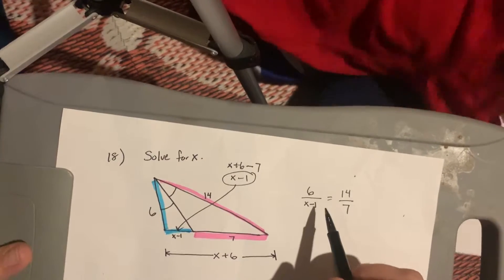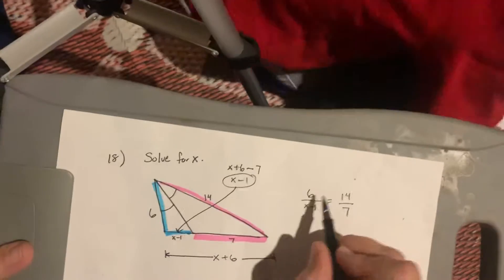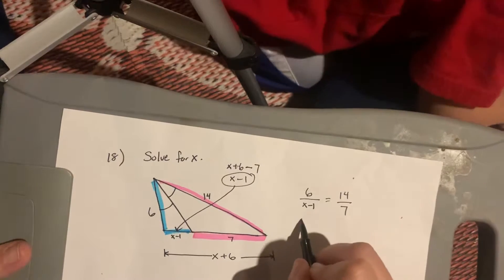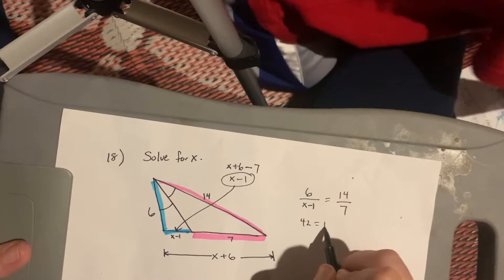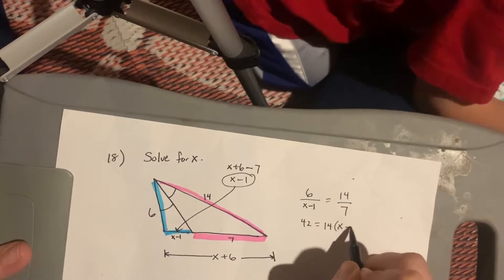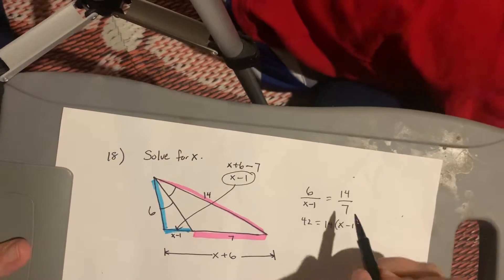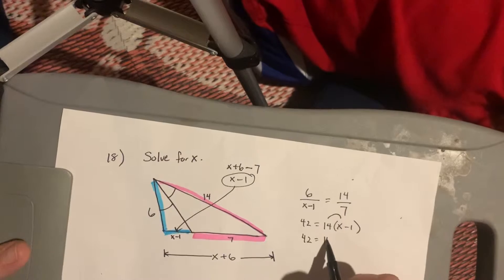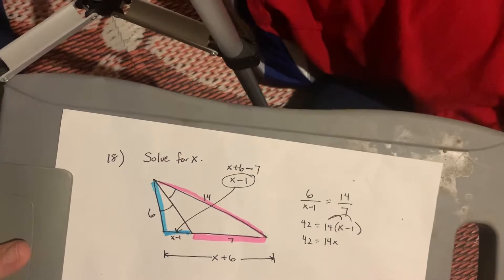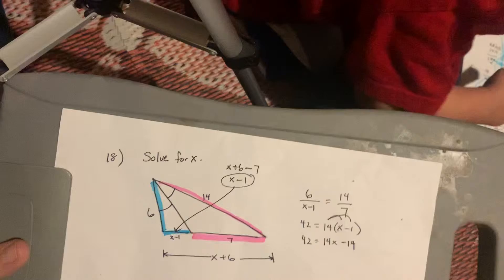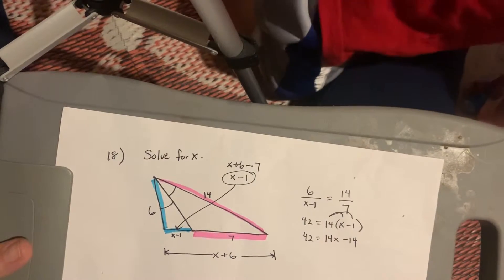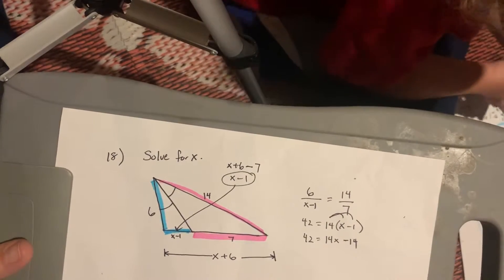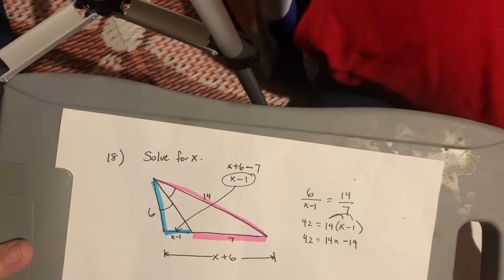Okay? So, from here, you should be able to cross multiply. I'm going to get you started just in case. 6 times 7 is 42. And then, on the other side, I have to do 14 times x minus 1. I'm writing it that way because I'm going to have to multiply the 14 times the x and get 14x. But, I'm also going to have to do the 14 times the negative 1 and get minus 14. So, you should be able to finish it up from there. If you can't, let me know.